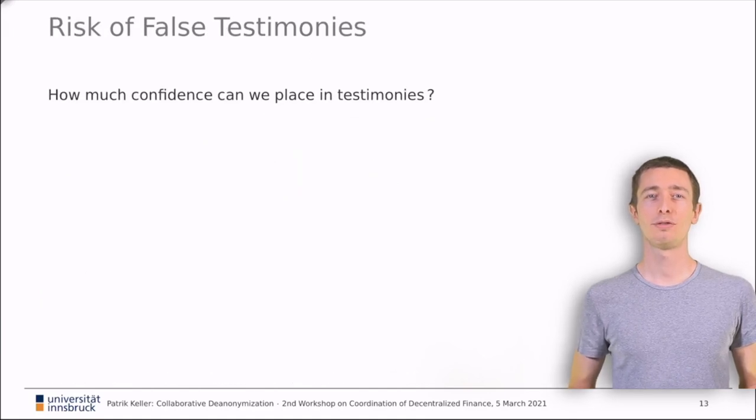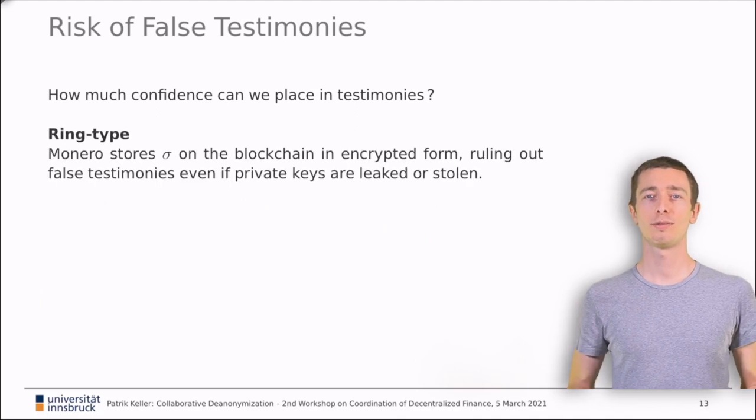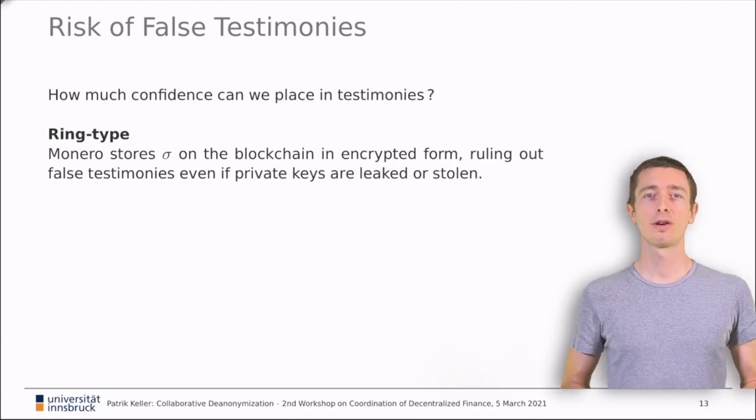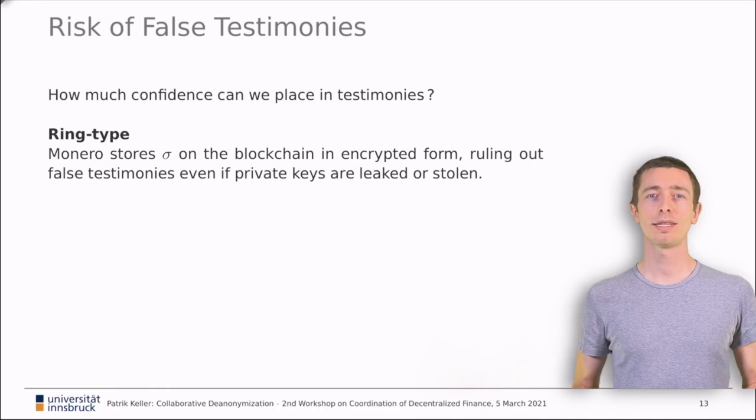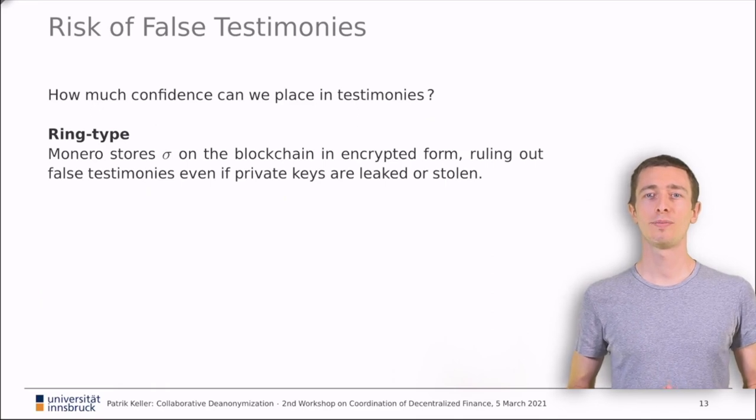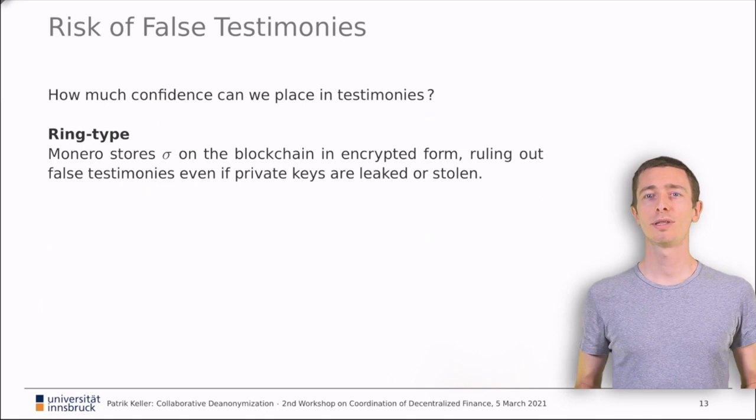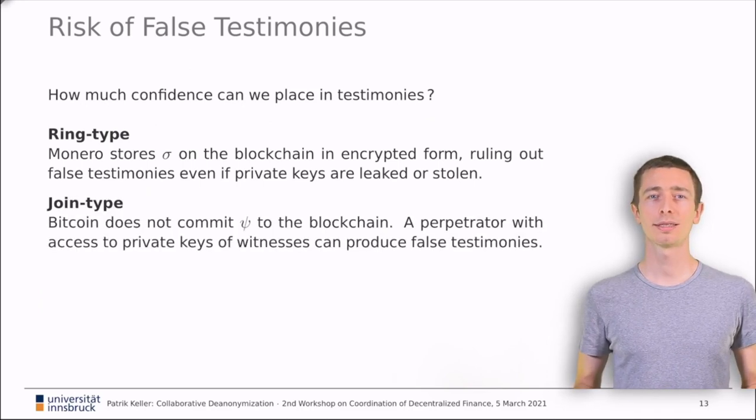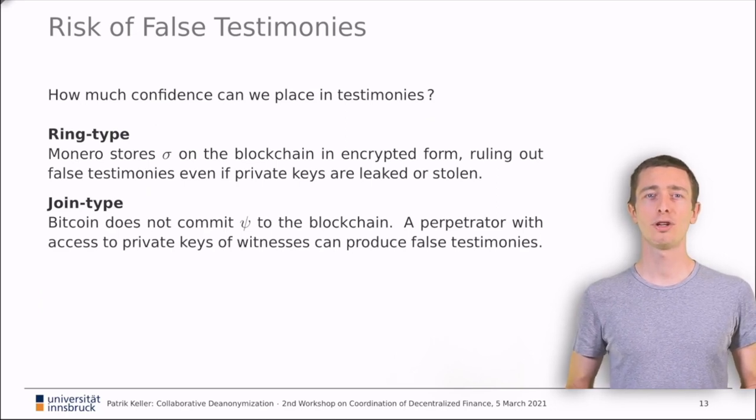Next, I want to discuss the potential risk of false testimonies. So how much confidence can law enforcement place into the testimonies it receives from the witnesses? It turns out that here lies another important difference between the ring type and joint type transactions. Ring type transactions, as implemented in Monero, commit a true link to the public ledger. The commitment is needed to prevent double spending. The true link is stored in obfuscated form. However, it can be inferred unambiguously from the testimonies. Even if the true suspect controls all witnesses' private keys, it cannot forge a false testimony. This guarantee is much stronger than what we have for coin-joint transactions on Bitcoin.